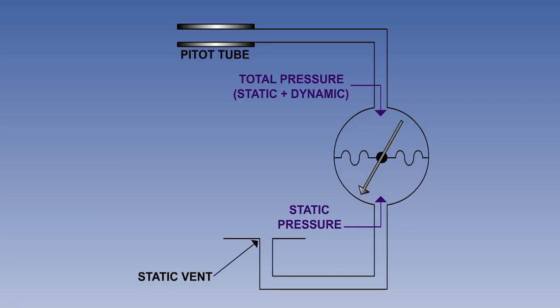A way of subtracting the static pressure from the total has to be found, and this is achieved by way of one or more vents located on a surface parallel to the airflow, usually on the fuselage, which will sense static pressure.